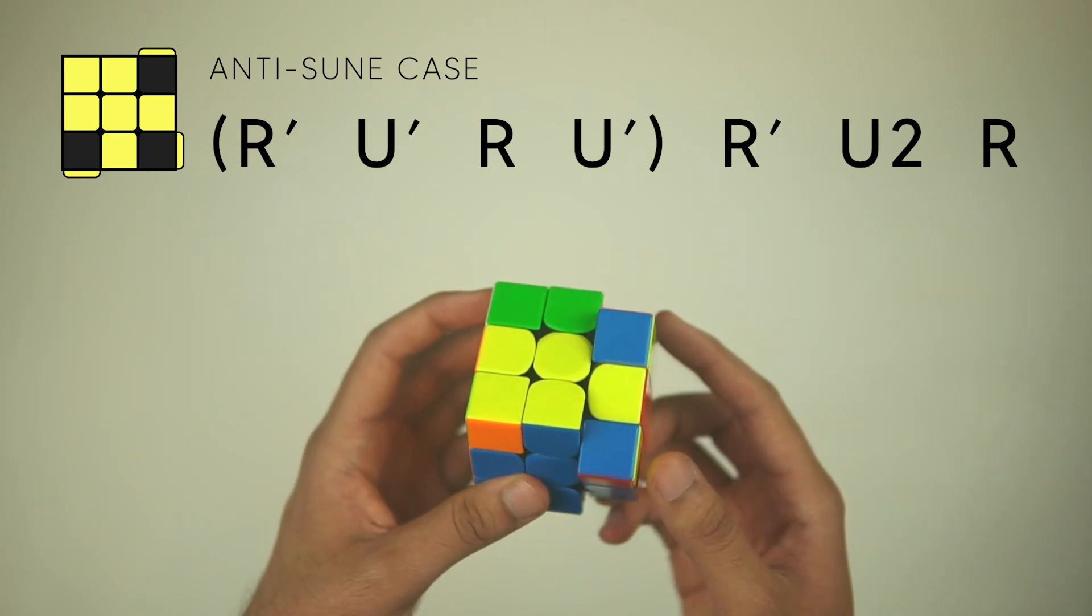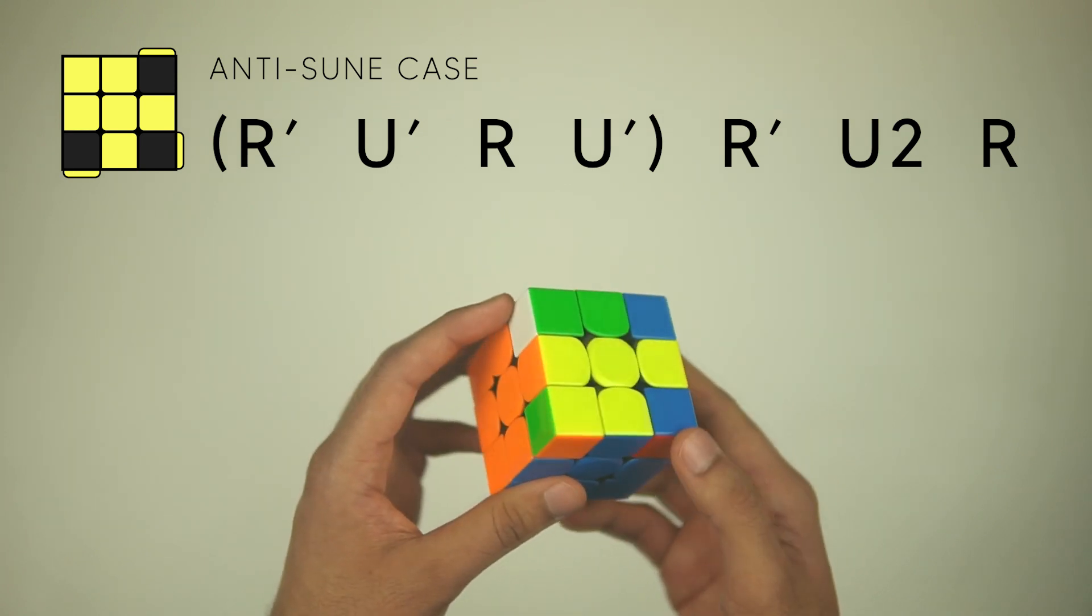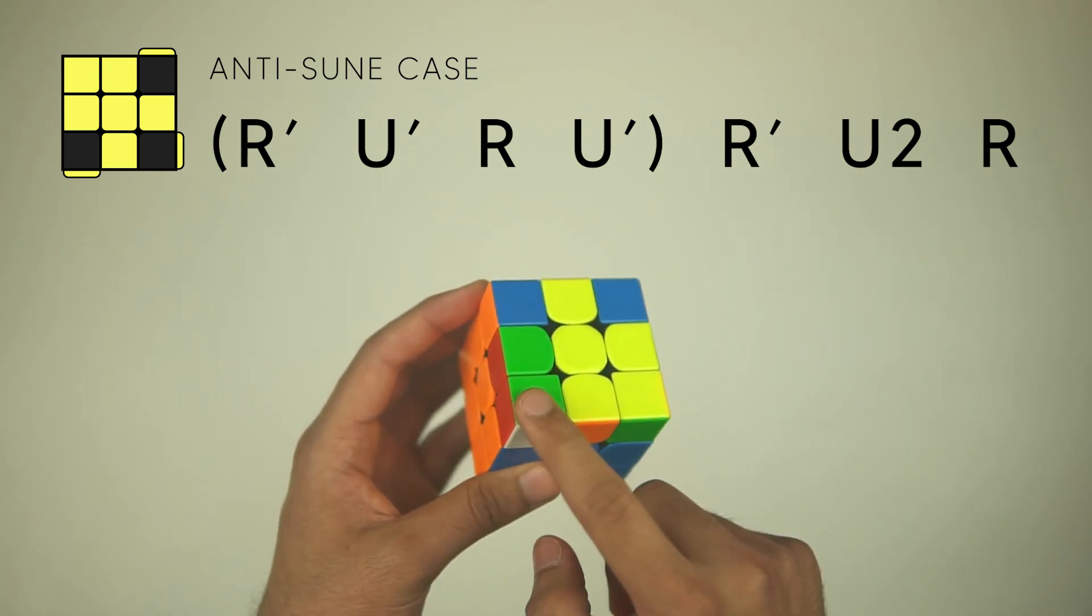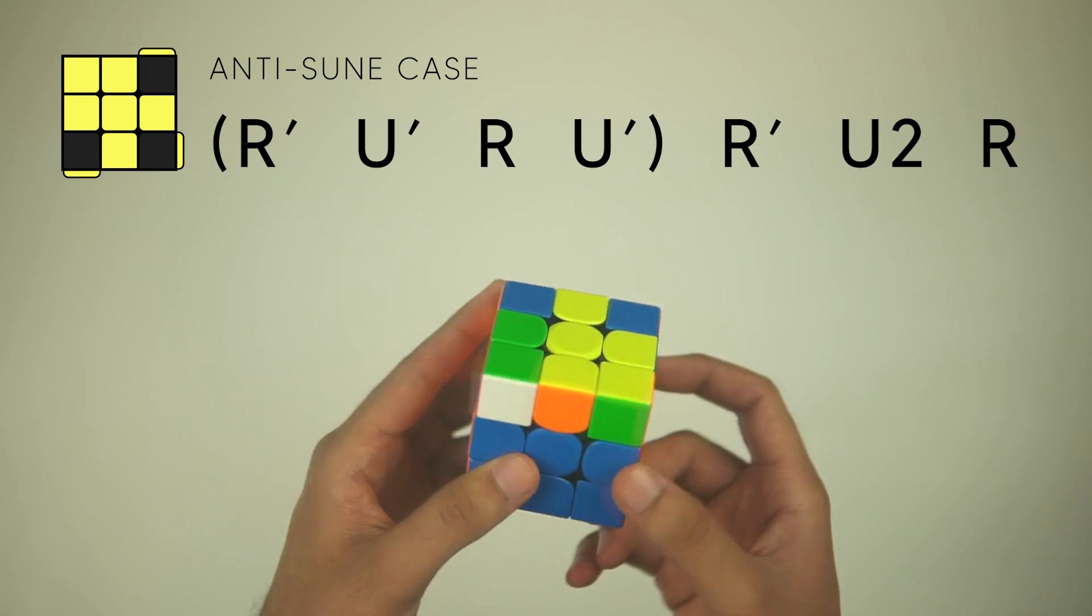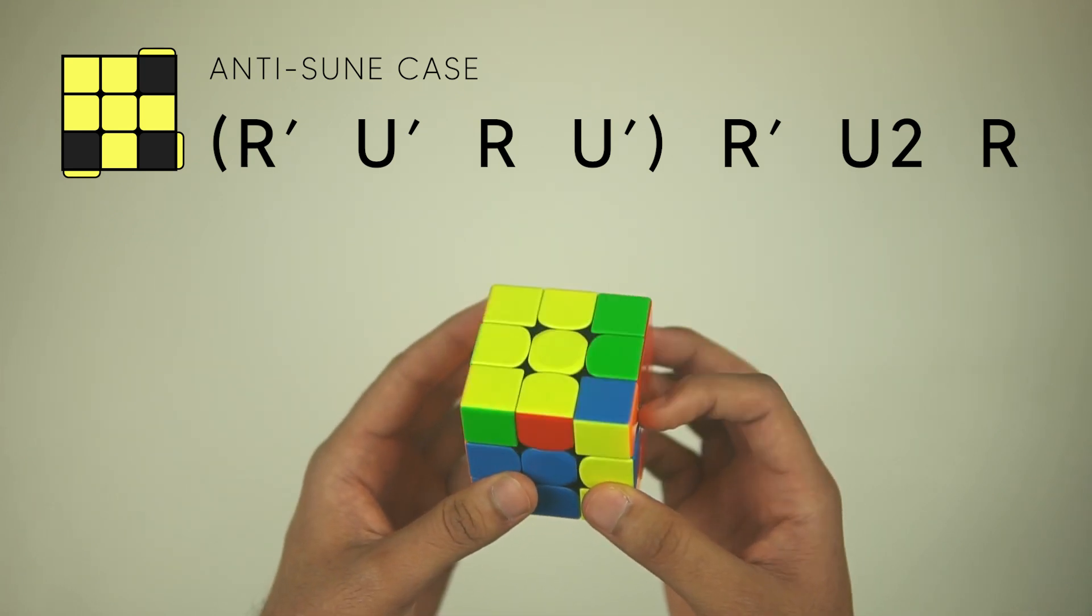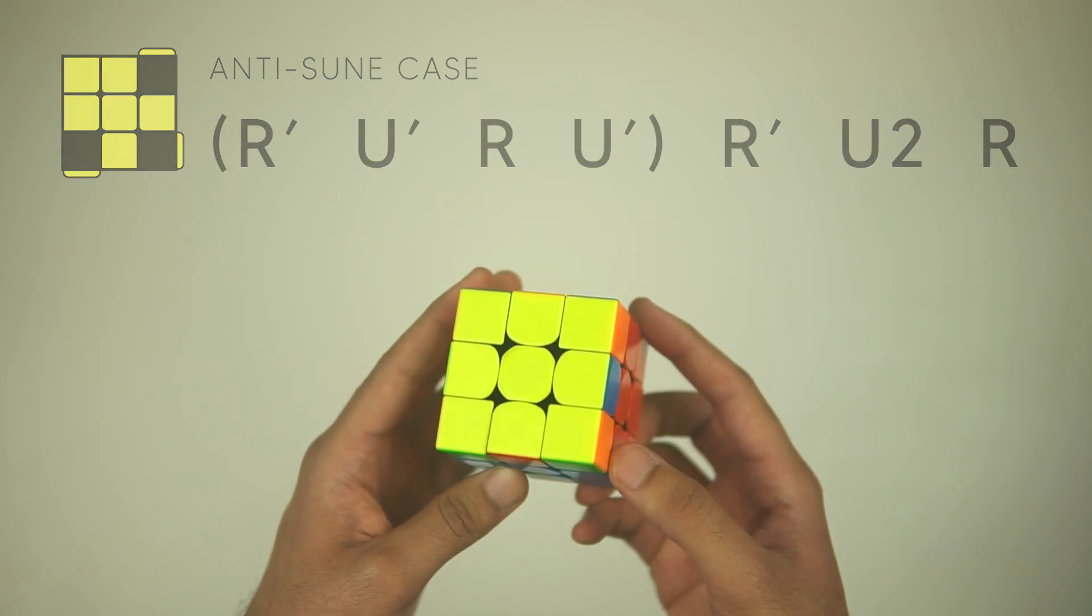Like this with the U', R to return the cross, we're going to move it over once with the U' again, and then we have to insert this F2L back in the back right slot. So we're going to do an R', U2, R, and there it is.